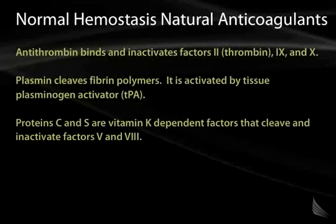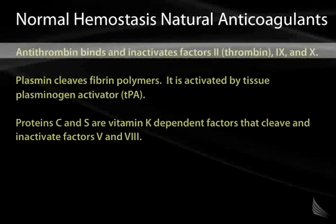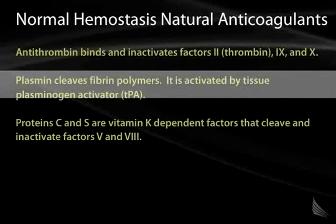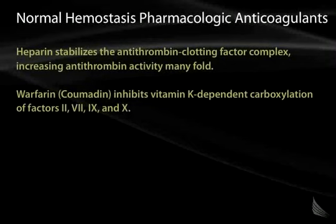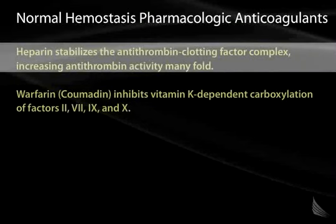The natural anticoagulants that keep this process in check are antithrombin and protein C and S. Antithrombin binds and inactivates factors II, IX, and X, keeping the clotting cascade from proceeding out of control. There is also a circulating enzyme, plasmin, which cleaves fibrin polymers and is activated by tissue plasminogen activator (tPA), which has pharmacologic significance as a clot buster. Heparin stabilizes the antithrombin-clotting factor complex, thus increasing the activity of antithrombin many fold.